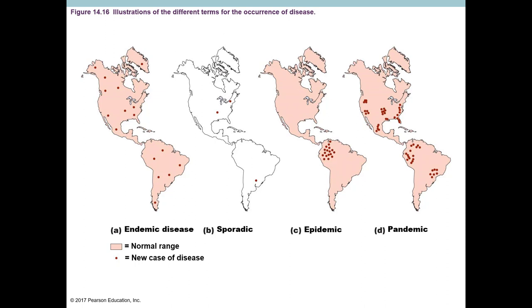Sporadic cases are occasional appearances of something unusual in a place where it normally doesn't appear — usually the result of someone traveling to an endemic area and returning home before showing symptoms. Epidemic is where you have a large number of cases in one place — you can draw a border around it, even if it's a large border. It doesn't matter whether it's in the normal range of the disease; a whole bunch of cases in one place is an epidemic, and that's where epidemiologists start investigating.